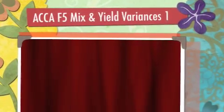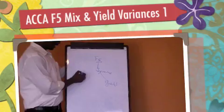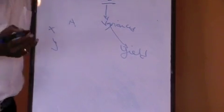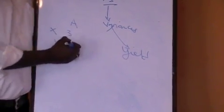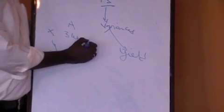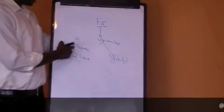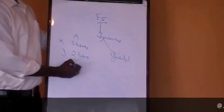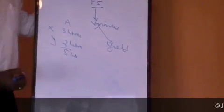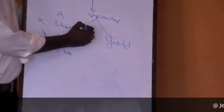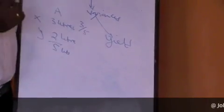The ingredients of the product are interchangeable. If we have product A with ingredient X and ingredient Y, in order to produce one unit of a product, we may use 3 liters of X and 2 liters of Y. So this product has got 2 ingredients. The standard mixture here is 3 to 2. The total mixture is 5 liters. For X, we require 3 out of 5 to be X according to the standard.